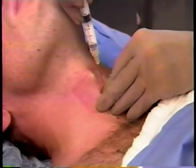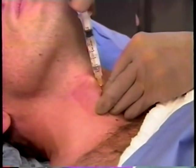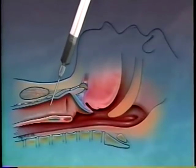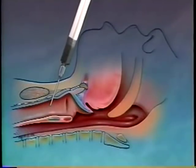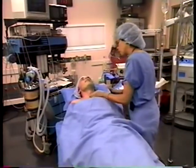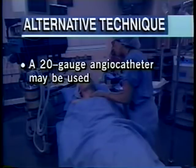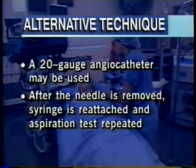As the needle is passed through the cricothyroid membrane, resistance will be felt. At that point, aspiration for air verifies placement in the lumen of the airway. An adult patient is asked to take a deep breath and, at the end of inspiration, 3 ml of 4% lidocaine is injected and the needle removed. This maneuver usually stimulates coughing, which helps to distribute the local anesthetic. Alternatively, a 20 gauge angiocatheter may be used; after the needle is removed, the syringe is carefully reattached and the aspiration test performed again.